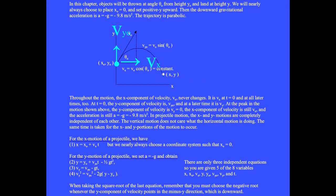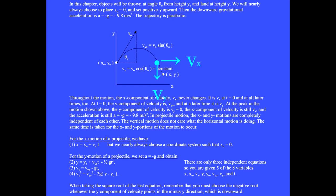At t equals zero, the y component of velocity is v sub y zero, and at a later time it is v sub y. The y component of velocity shrinks as the object rises upward. At the peak of the motion, the y component of velocity is zero. The x component of velocity is still v sub x, and the acceleration is still a equal minus g equal minus 9.8 meters per second squared. After passing the peak, the y component of velocity becomes increasingly negative. Throughout the motion, the acceleration remains minus g. At t equals zero, the acceleration is minus g no matter whether you throw the object upward or downward.